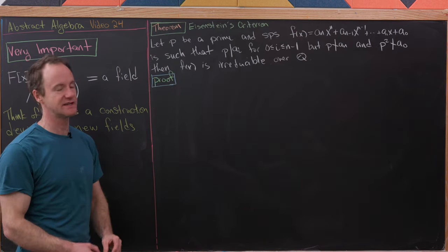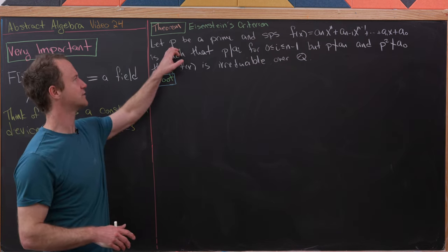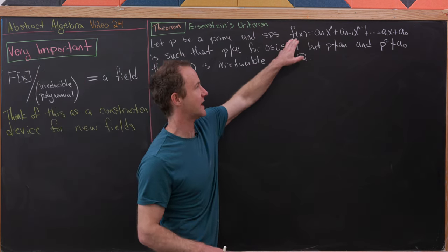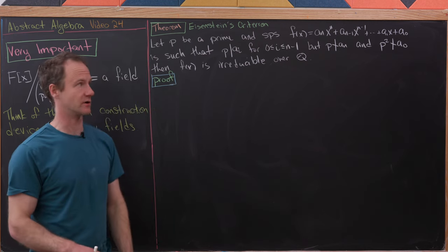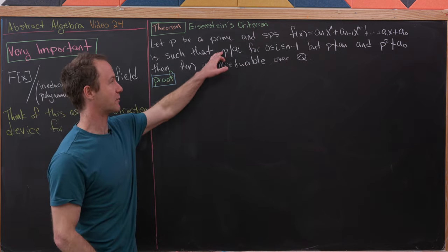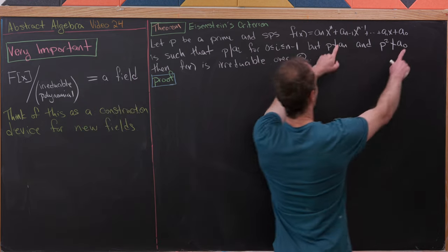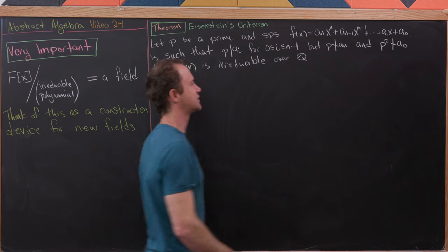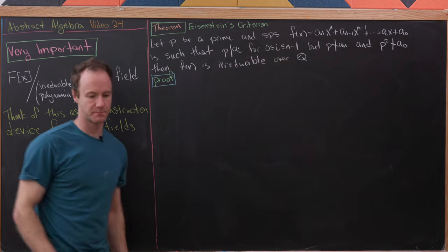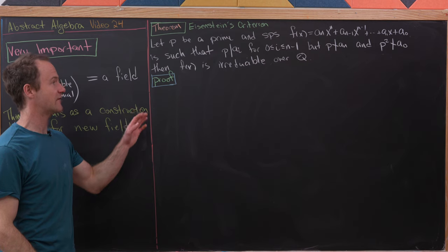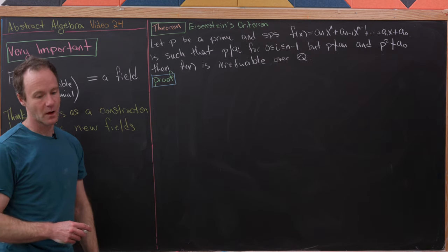Our next big theorem is Eisenstein's criterion — a test for irreducibility over Q. Suppose p is a prime and f(X) = aₙxⁿ + aₙ₋₁xⁿ⁻¹ + ··· + a₁x + a₀. Assume: p divides aᵢ for all i from 0 to n−1 (all coefficients except the leading one), p does not divide the leading coefficient aₙ, and p² does not divide the constant term a₀. Then f(X) is irreducible over Q.